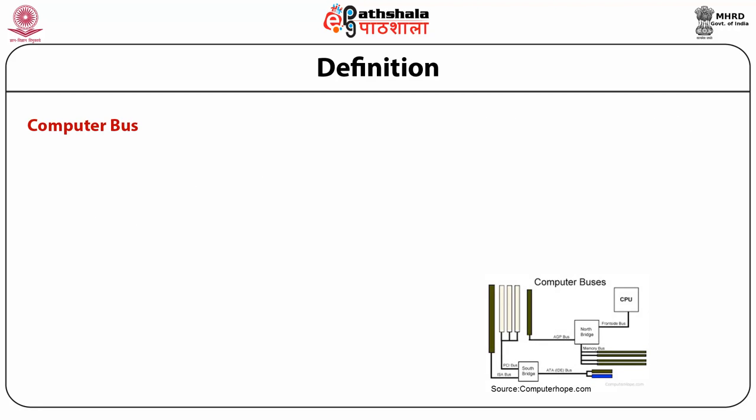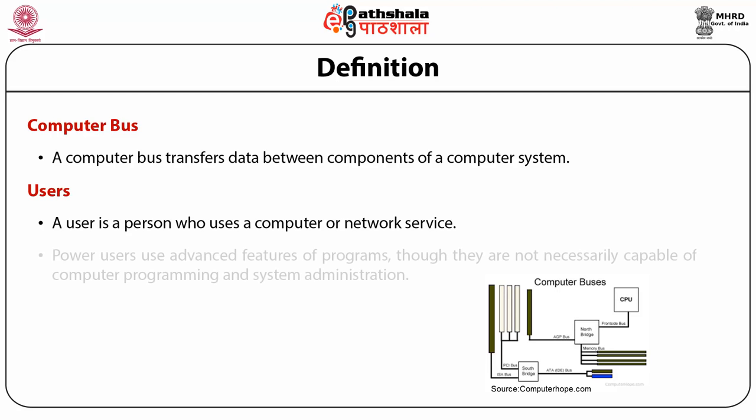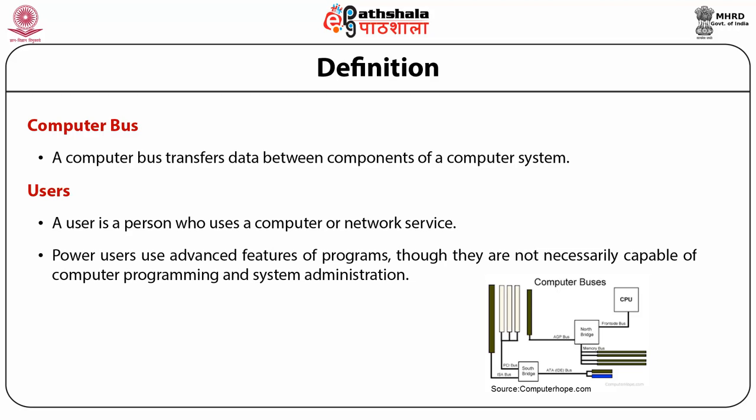A computer bus transfers data between components of a computer system. This module covers how a system bus works, what it is useful for, and what aspects make for good overall performance. Users are persons who use a computer or network service, generally without technical expertise. Power users use advanced features of programs, though they may not be capable of programming or system administration.